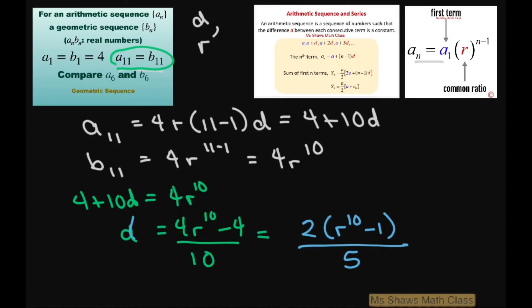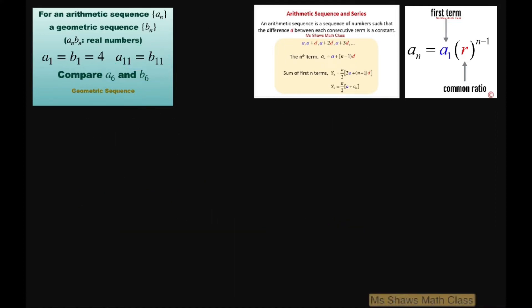Now we're going to look at our 6th term and compare these. Our d was 2 times r^10 minus 1, all divided by 5. If we look at a_6, that one is arithmetic, so that's going to be 4 plus 5d.